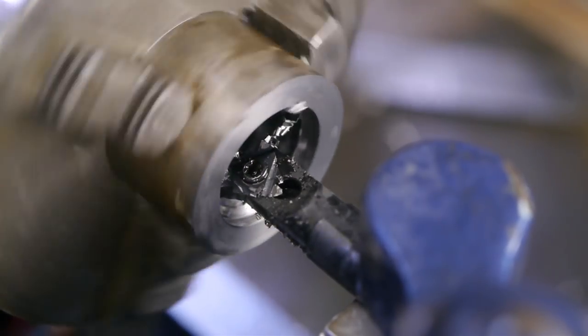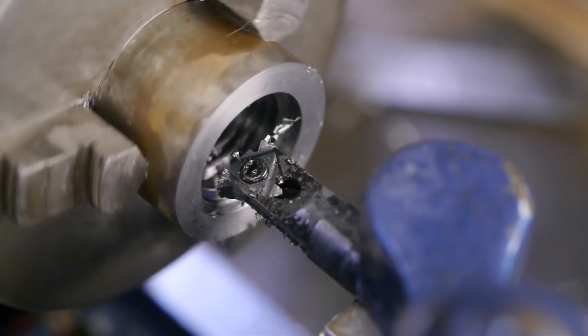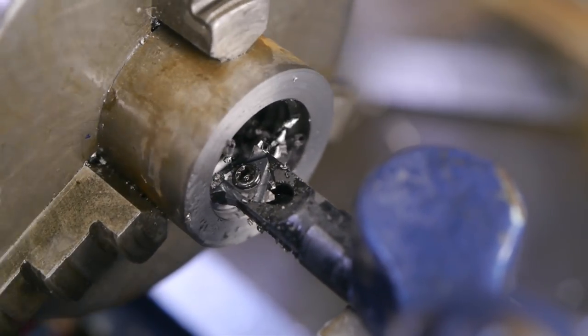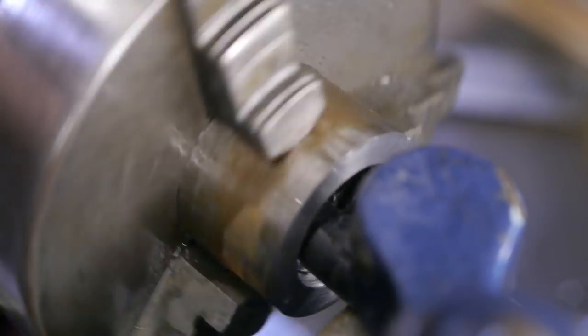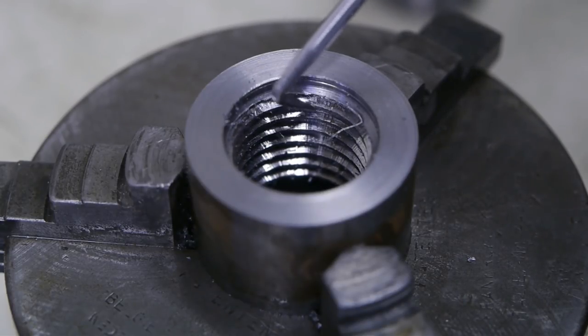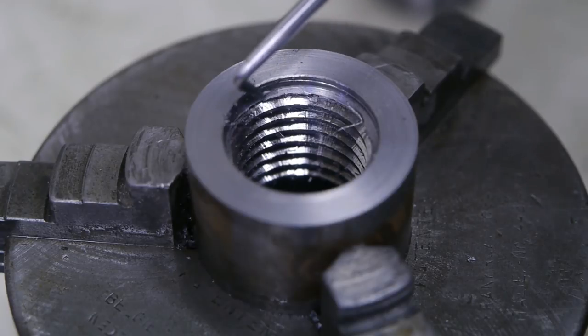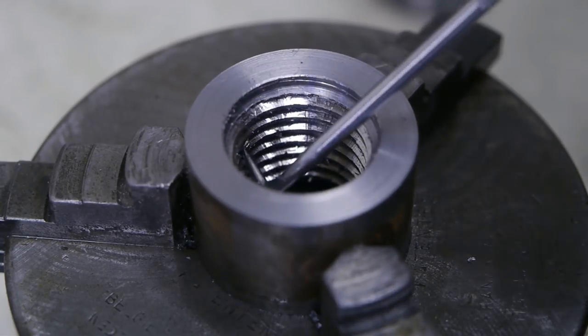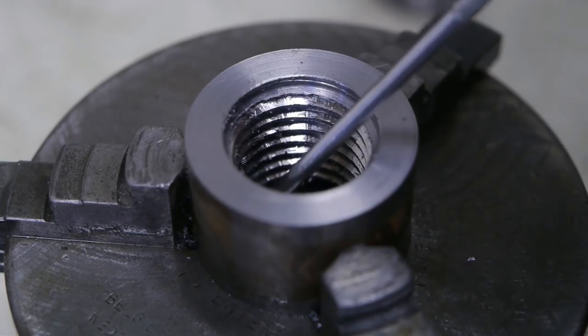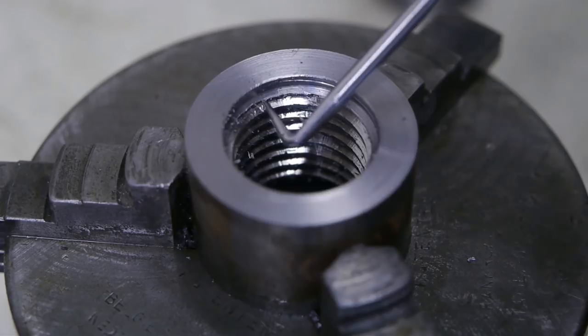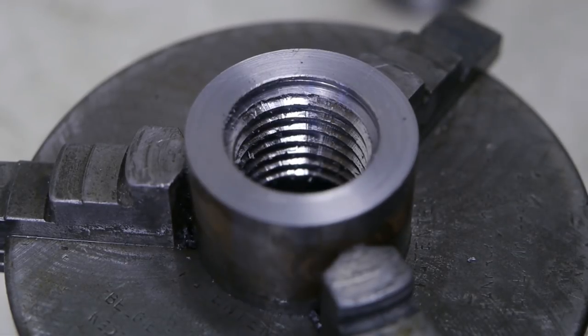One more pass and then I'll flip the chuck around. The thread looks a lot better now. There are still a few burrs here, especially at the start of the thread, but further down it looks okay. I'm pretty sure the first tip also got damaged at some point without me noticing it.